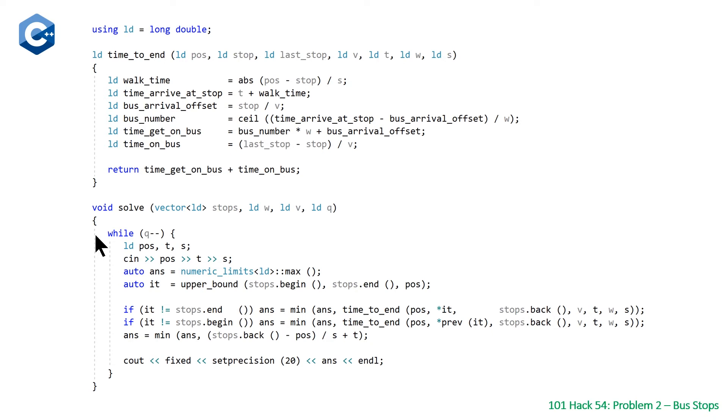We're just going to loop through for each individual, read in the starting position, the time at which they show up, and the speed that they can walk. Then we set our answer initially to the maximum that a long double can be.